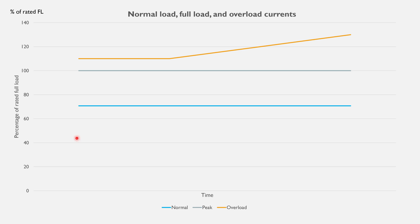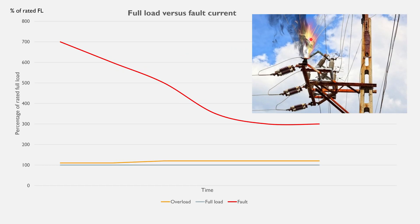On the left here I have the percentage of rated full load current. For example, 100 means the maximum current that the device can tolerate. Full load is the maximum load that the device can handle, usually for a short period of time. Overload is about 10, 15, or 20 percent higher than full load — so you can see this line here at around 110 percent, maybe even 120 or 130.